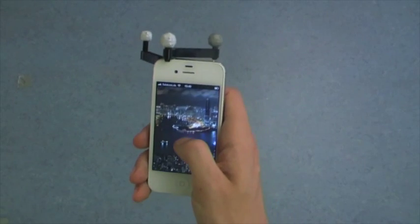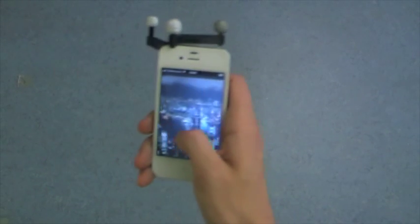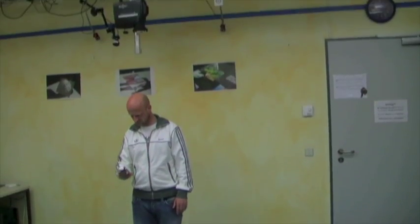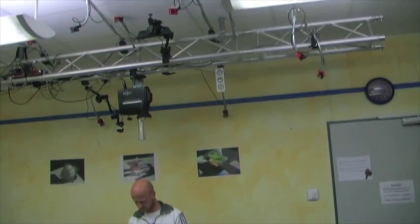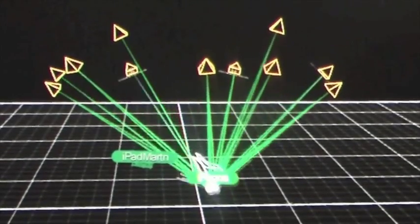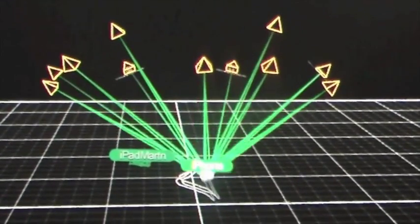It was really important for us to implement a precise and stable prototype. That's why we used an unobtrusive motion capturing system called OptiTrack. This tracking system is using several cameras to determine the spatial position of the device.